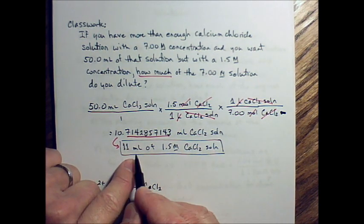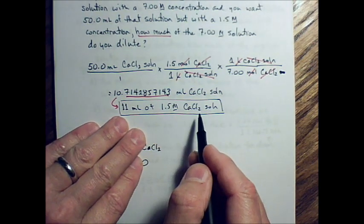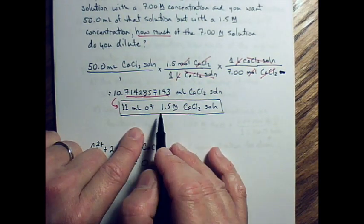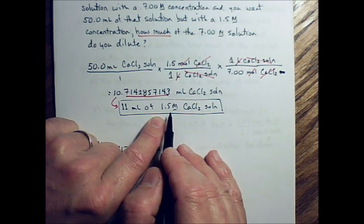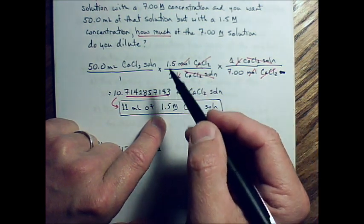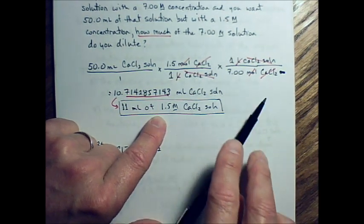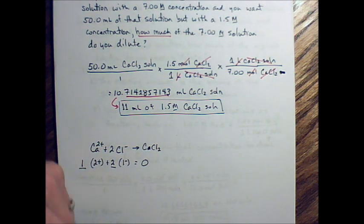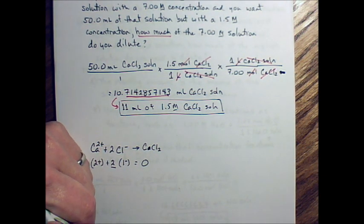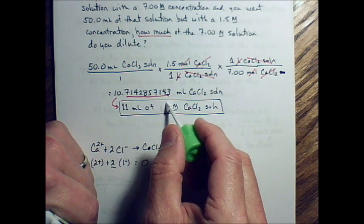What do I do with this information? Now that I know what this is, I need 11 milliliters. Wait, you know what, that's wrong. This is not the 1.5 molar solution. We're trying to find how much of the 7 molar solution there is. So this is not the 1.5 molar, is it? We are going to dilute it to get 1.5, but this is the one that belongs with 7.